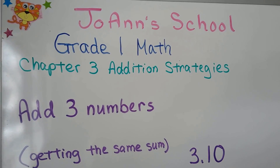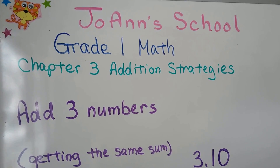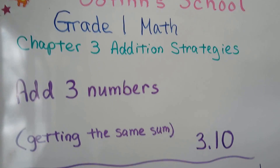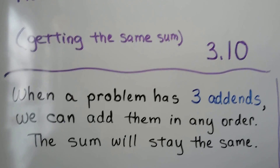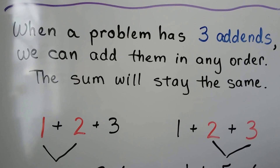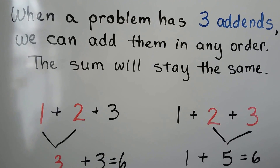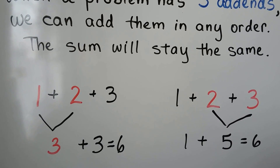Add three numbers, getting the same sum. Lesson 3, 10. When a problem has three add-ins, we can add them in any order. The sum will stay the same.